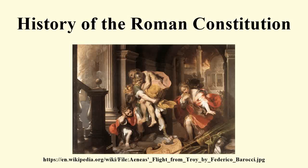The history of the Roman constitution is a study of ancient Rome that traces the progression of Roman political development from the founding of the city of Rome in 753 BC to the collapse of the Western Roman Empire in 476 AD. The constitution of the Roman kingdom vested the sovereign power in the king of Rome. The king did have two rudimentary checks on his authority, which took the form of a board of elders and a popular assembly. The arrangement was similar to the constitutional arrangements found in contemporary Greek city-states.